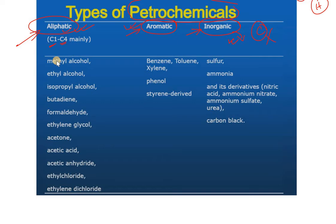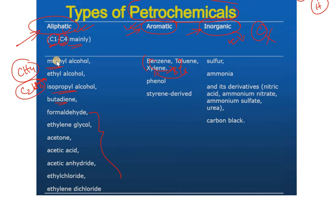The types are aliphatic, aromatic, and inorganic. For aliphatic, examples include methane (CH4), ethane (C2H6), isopropyl alcohol, and butadiene — these are examples of aliphatic hydrocarbon petrochemicals. Similarly, aromatics are benzene, toluene, and xylene — referred to as BTX. BTX derivatives include phenol and styrene.